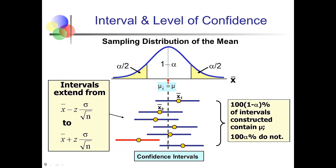With a 95% confidence level, only 5% of confidence intervals are like the red one—from a sample where the sample mean is really low and the interval did not contain the true population mean. In reality, we don't know if our confidence interval is like the blue one or the red one. All we can know is that with a 95% confidence level, we're 95% sure we're on one of the blue intervals, and have only about a 5% chance of being on a red one.